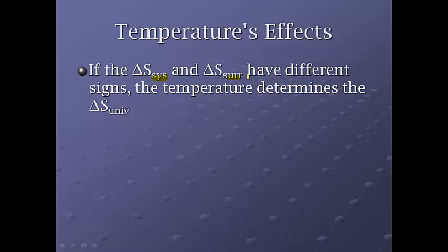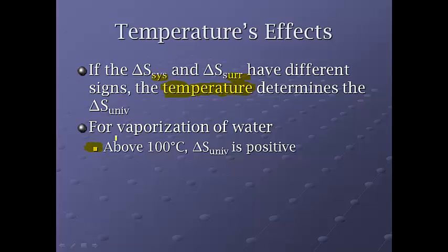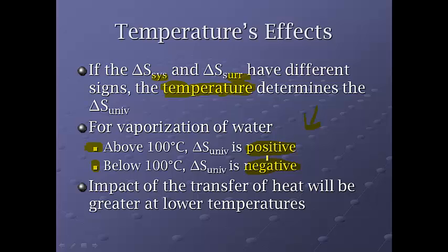Now, if the delta S of the system and the delta S of the surroundings have different signs, the temperature will determine it. Because if there's a high enough temperature for everybody to recover, we're good. If it's below a certain level, it's not going to happen. So for the vaporization of water, if it's above 100 degrees Celsius, the delta S of the universe is positive, because there's plenty of energy around to flow into that system to allow the randomness to occur. If vaporization of water tries to occur below 100 degrees Celsius, then the delta S of the universe is negative. And the impact of the heat transfer will be greater at lower temperatures because there isn't as much to play with. Above 100 degrees Celsius, if you've got more kinetic energy, you've got more spontaneity, you start to lower that temperature, you don't have as much play in the randomness that's there.